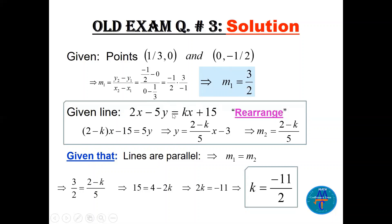Now take the given line. There is a trick: you see 2x and kx in the equation. Rearrange so you have one x, one y, and numbers, then solve for y. Bring kx over: (2−k)x as a common factor. Take 5y to the other side and divide by 5, giving y = ((2−k)/5)x − 3. So m2 = (2−k)/5. Setting m1 = m2: 3/2 = (2−k)/5. Cross multiply: 15 = 4 − 2k, so k = −11/2.